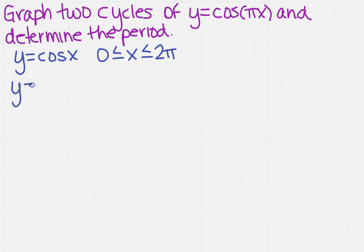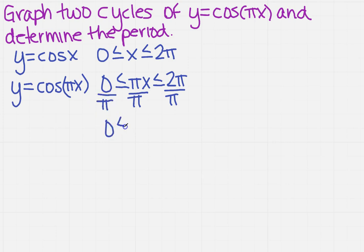So what do we have? Well now, instead of x, we actually have pi x. So everywhere there's an x in this inequality statement, we're going to plug in pi x. Now how do I get x all by itself? I need to divide everything by pi. So once I've divided everything by pi, I get 0 is less than or equal to x is less than or equal to 2.